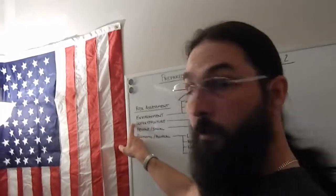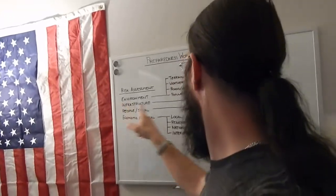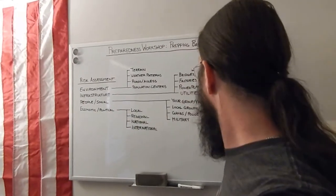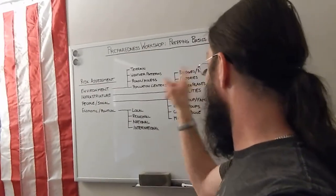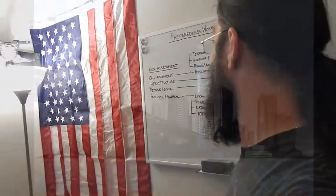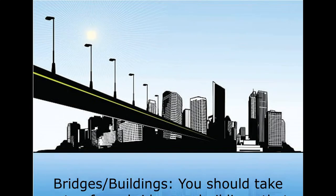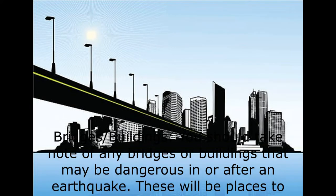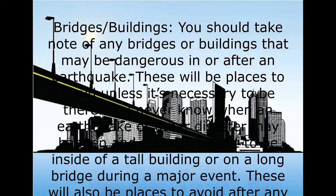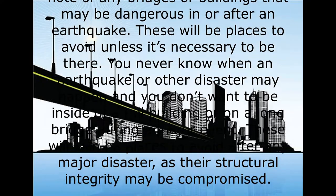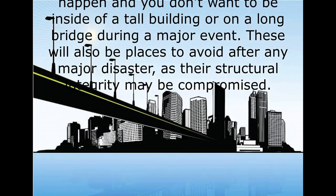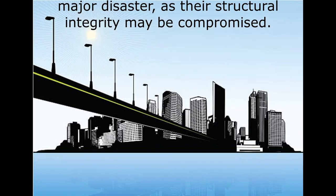When looking at infrastructure in your area, you're going to want to look at bridges and buildings, factories, power plants and dams, and the local utilities in your area. You should take note of any bridges or buildings that may be dangerous in or after an earthquake — these will be places to avoid unless it's necessary to be there. You never know when an earthquake or other disaster may happen, and you don't want to be inside a tall building or on a long bridge during a major event. These will also be places to avoid after any major disaster as their structural integrity may be compromised.